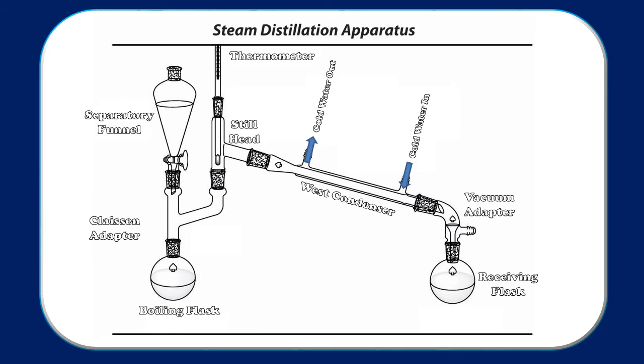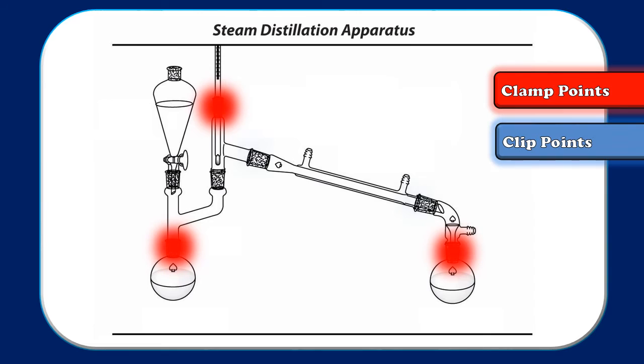In addition to this, keep in mind that there will be three clamp points and two clip points to help keep our apparatus together and stable inside of the fume hood.